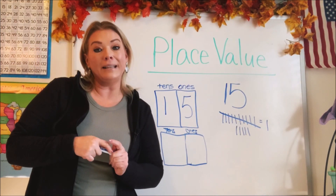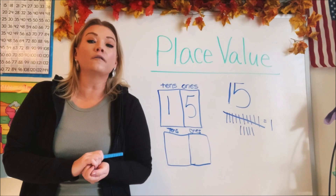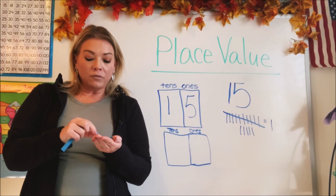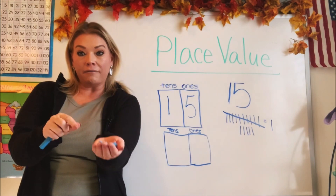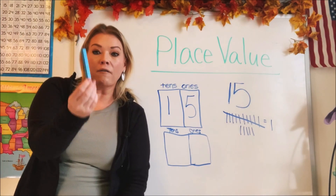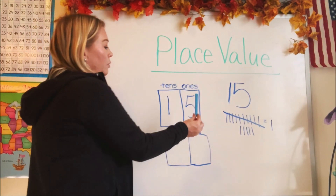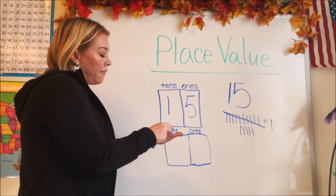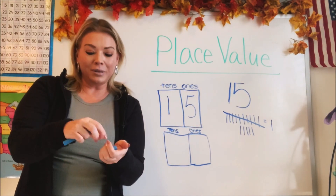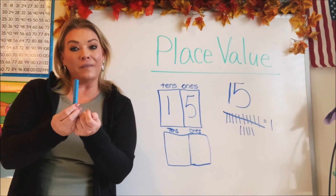So in place values, we count by tens. Maybe another way to look at this is with blocks — maybe you're familiar with blocks from your classroom, your teacher has shown them to you. So there are single blocks, and you could have 10 of them. But as soon as you get to 10, all of a sudden you have a long rectangle, and this represents a group of 10.